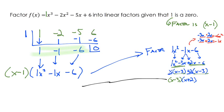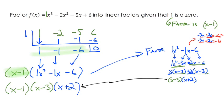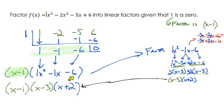Factoring out x minus 3 leaves x plus 2, so the quadratic factors as (x minus 3)(x plus 2). Combined with the original factor x minus 1, the fully factored polynomial is (x minus 1)(x minus 3)(x plus 2). In summary: when given a zero or factor, divide it out via synthetic division to get a reduced polynomial, factor the resulting quadratic using traditional methods, and combine all factors.